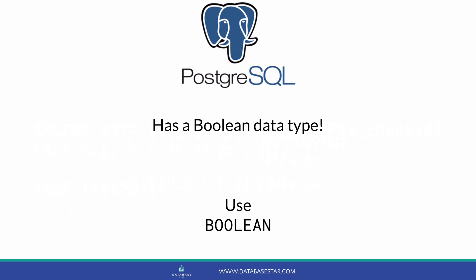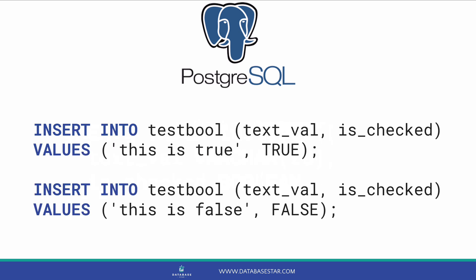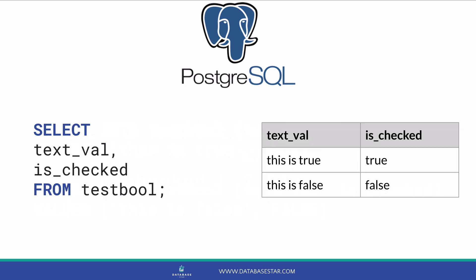PostgreSQL actually does have a Boolean data type, unlike the other databases we looked at. It's a proper Boolean type as well, which means it can handle true and false values. Here is the SQL to create the table with it. We use the data type of Boolean. There is no need to specify a check constraint or a number of digits, just the Boolean data type. To insert data, we specify the value of true or false. When we select from the table, our two records are shown with the values of true and false. So PostgreSQL is the only database of the four here that implements a Boolean data type.